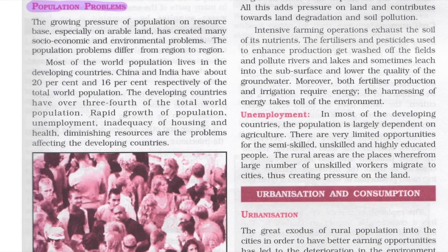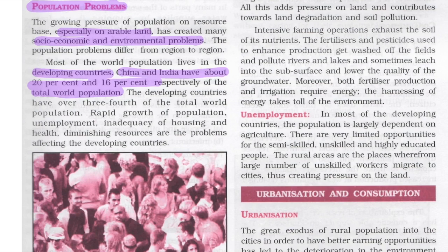As population grows, pressure on the resource base, especially arable land, also increases, creating many socio-economic and environmental problems. Most of the world's population lives in developing countries — China and India have about 20% and 16% of the total world population respectively. The developing countries have over three-fourths of total world population. Rapid population growth leads to unemployment, inadequacy of housing and health, and diminishing resources.